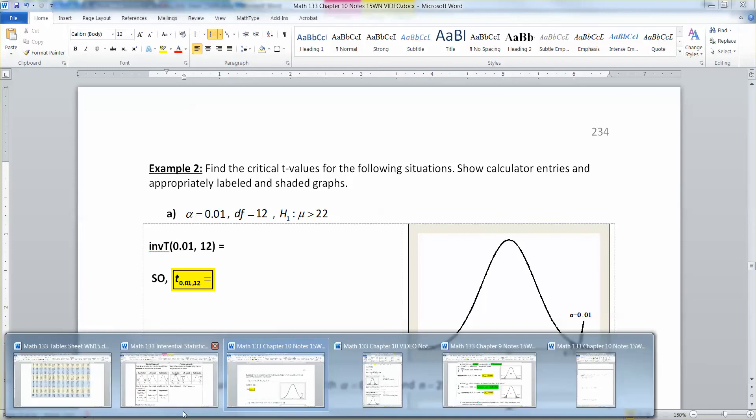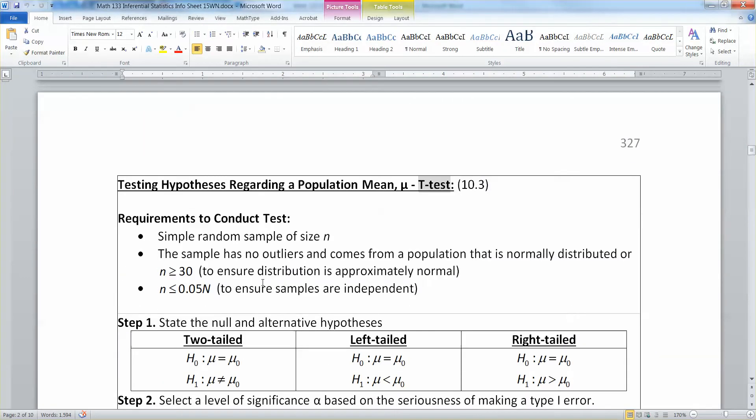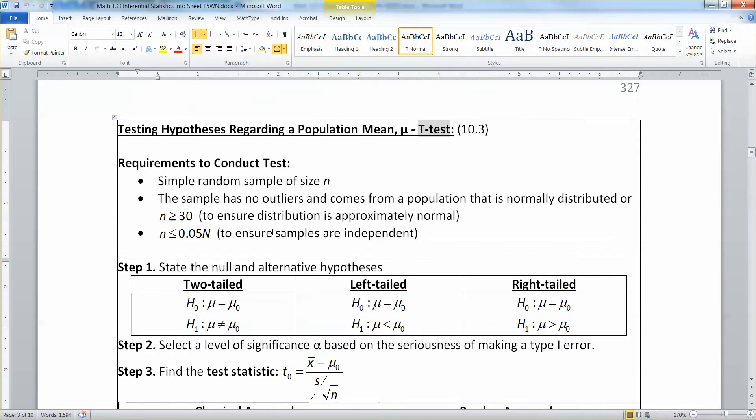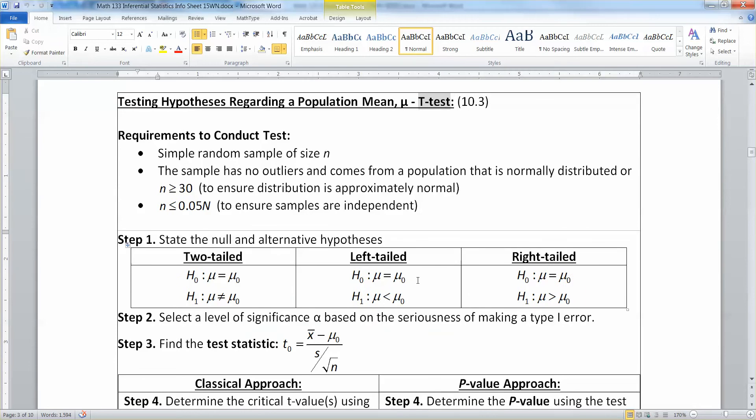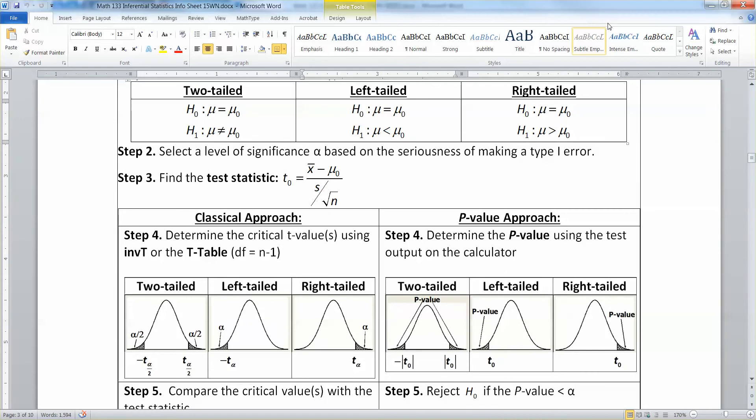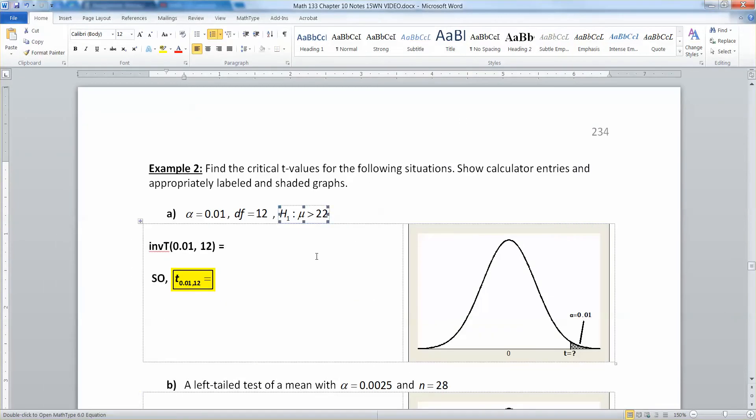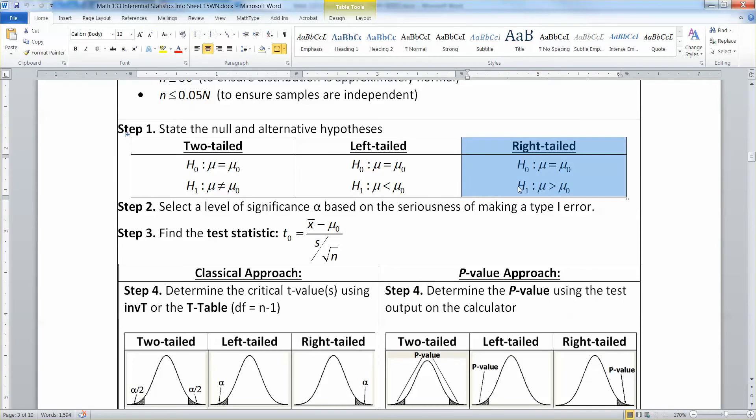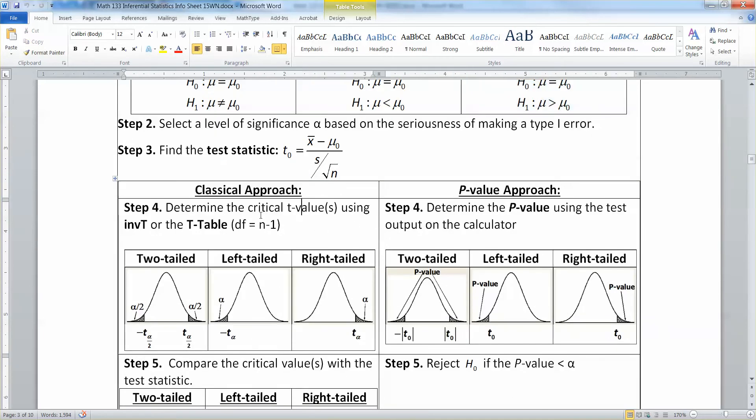So let's grab the inferential statistics sheet. And we're in section 10.3. So we're talking about mu rather than p proportions. And we're looking at a right-tailed test. Got it. So right-tailed test is a greater than test. So we want to look at these pictures right here. And we're choosing the one on the right, the right-tailed test. So we want to have alpha and t alpha. And we can find the critical t value using either inverse t or the t table, if possible.